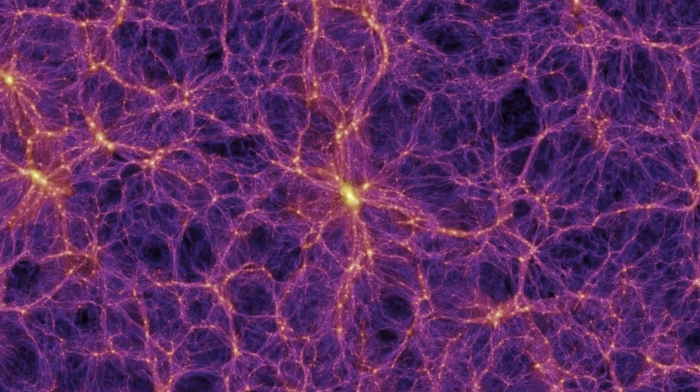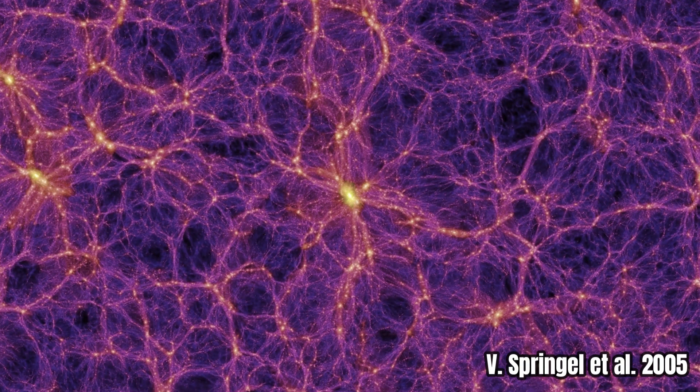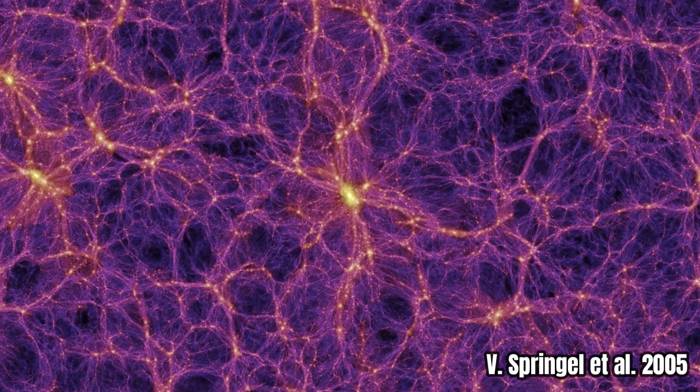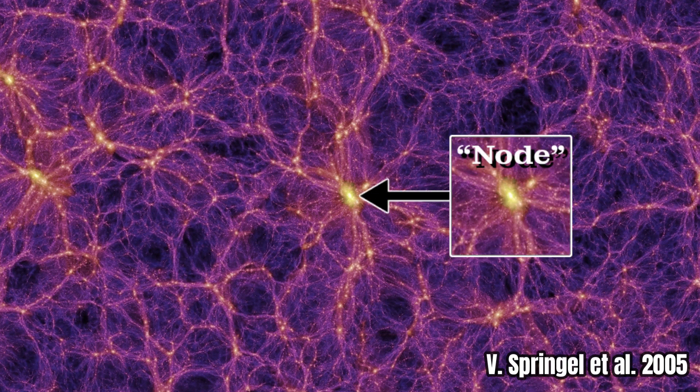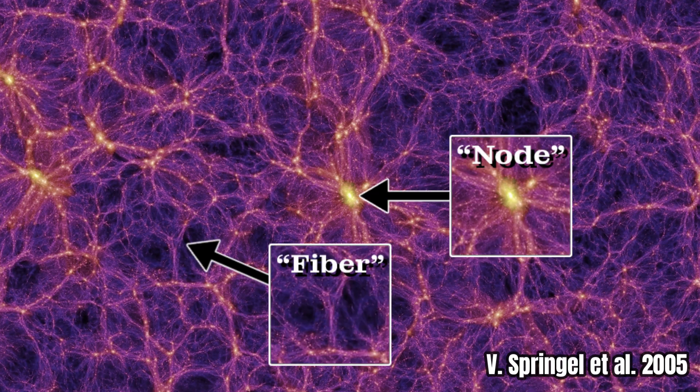Today we know that dark matter seems to be distributed across the cosmos in a net-like pattern, with galactic clusters forming at the nodes where the fibers intersect, weaving together superclusters and more with this mysterious distribution structure.